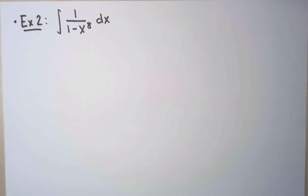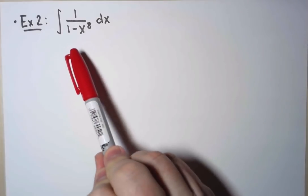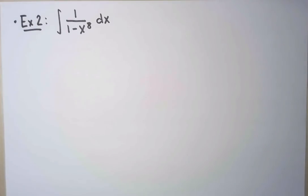Sometimes, even when it is possible to compute an antiderivative, it is preferable not to bother and to use power series instead. Here is a second example to illustrate it. I just want to find the antiderivatives of this function, 1 over 1 minus x to the 8.